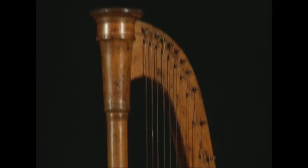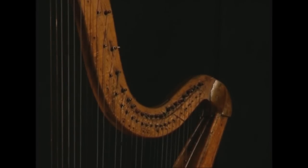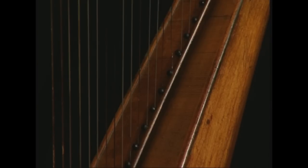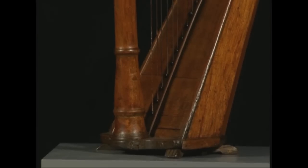The harps used in traditional Western music are always made up of three elements: the soundbox, the neck, and the front column that completes the ideal triangle.